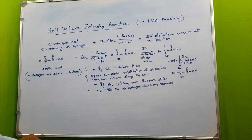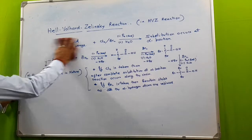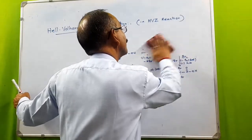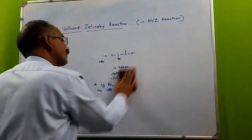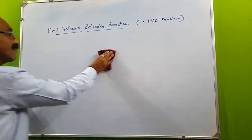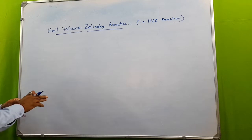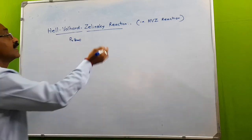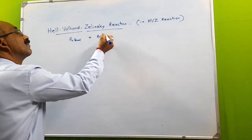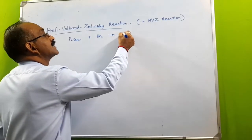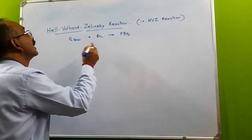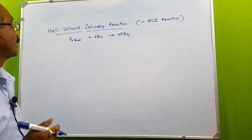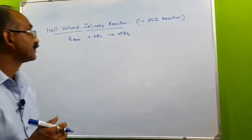Now we will discuss the mechanism of this reaction. First, the red phosphorus reacts with bromine, and as a result we obtain PBr₃. To write the balanced reaction, we take six molecules of bromine because phosphorus exists as a P₄ molecule.